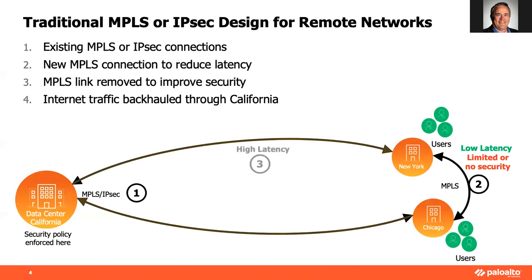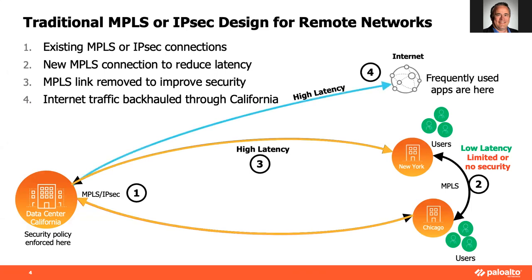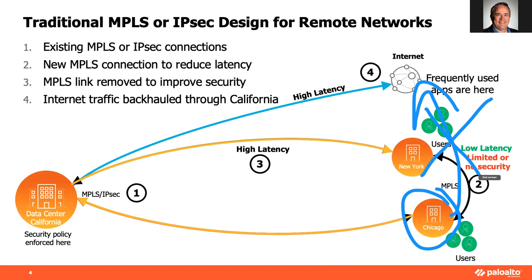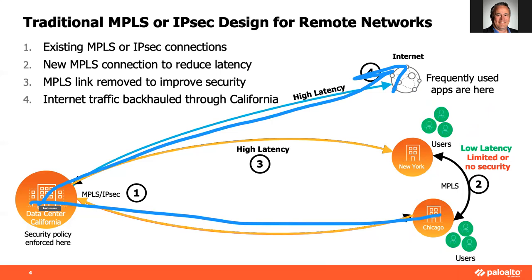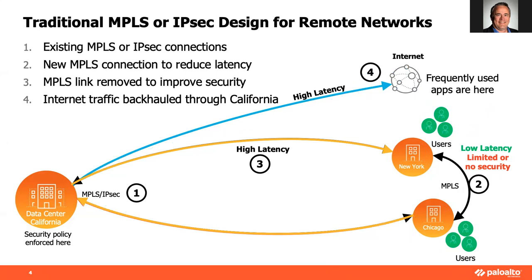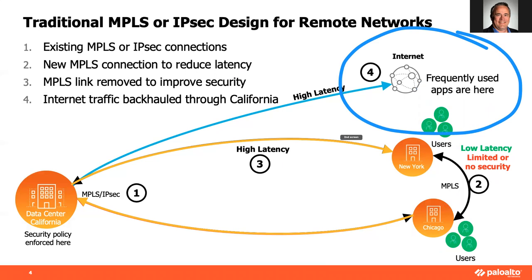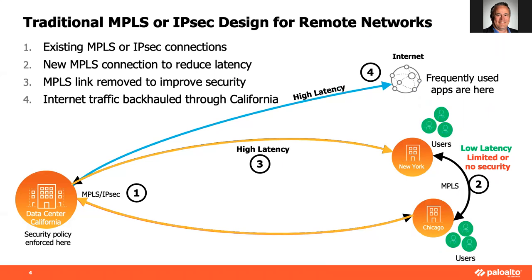So either you sacrifice security or you sacrifice performance. That leaves you backhauling all the traffic back to a main data center, even if users in one office are just trying to get out to the Internet. They end up having to backhaul halfway across the continent just to get to those SaaS applications hosted on the Internet — resulting in poor performance and poor user experience.